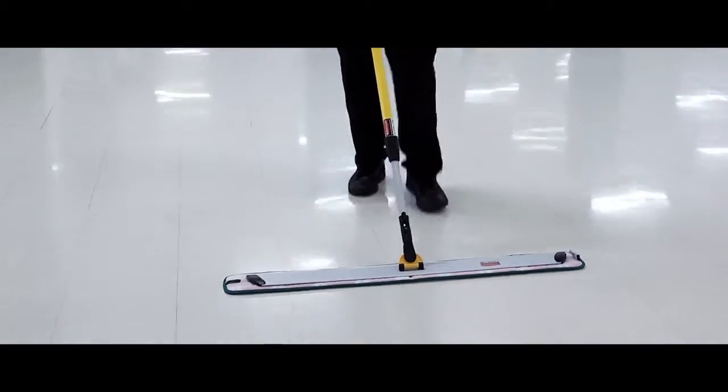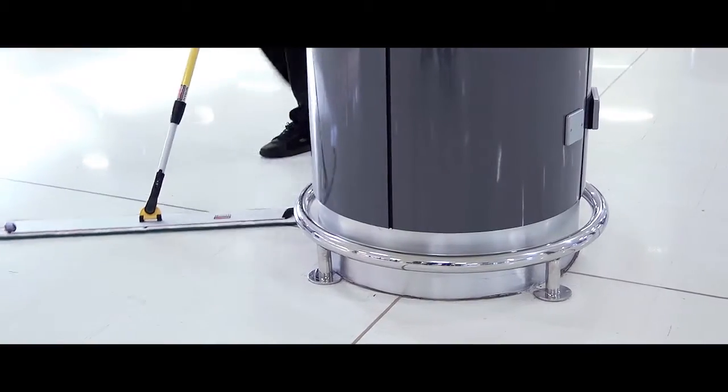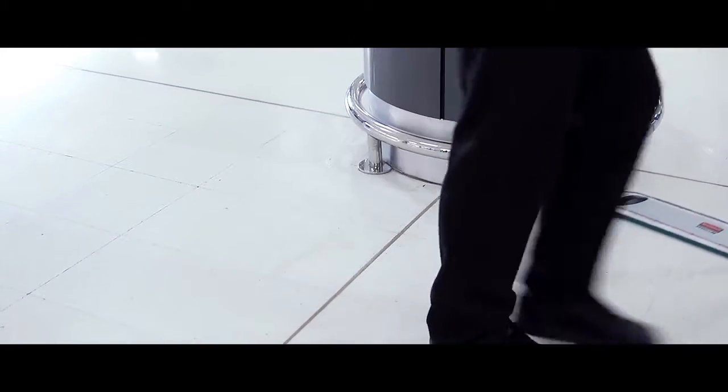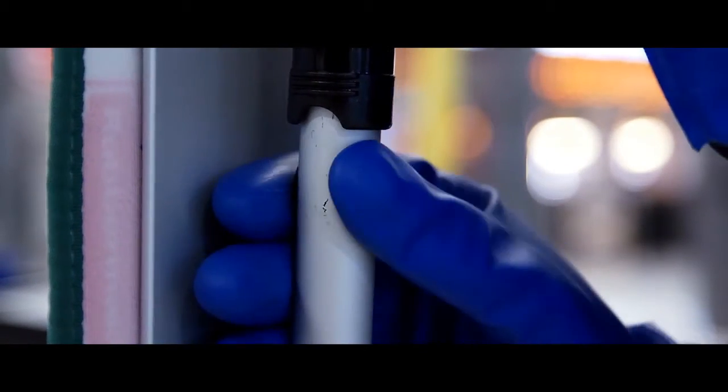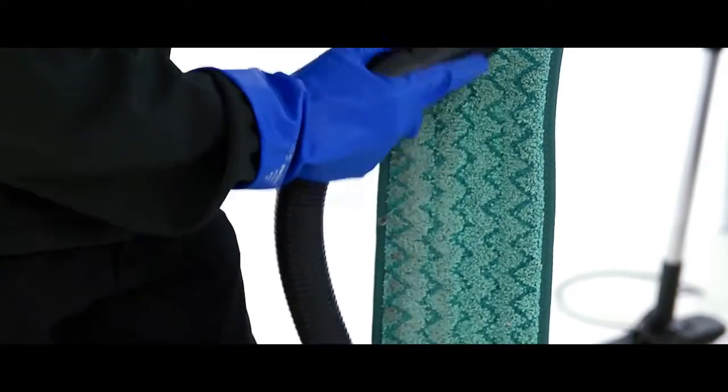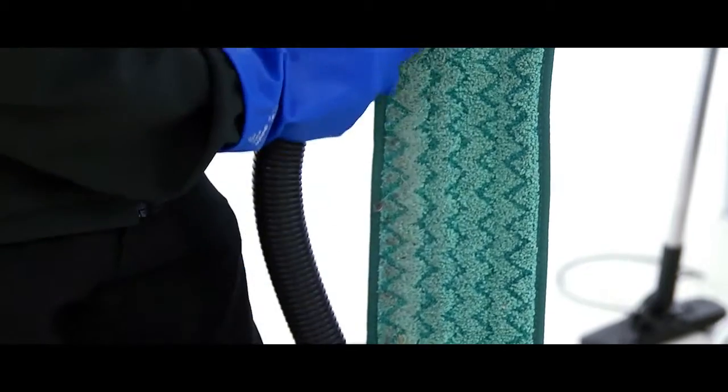When you have a build-up of dust on the leading edge, simply release and rotate the frame 180 degrees so you utilise both edges of the pad. If the pad has accumulated too much dust, vacuum the surface of the pad to remove the dirt before reusing.